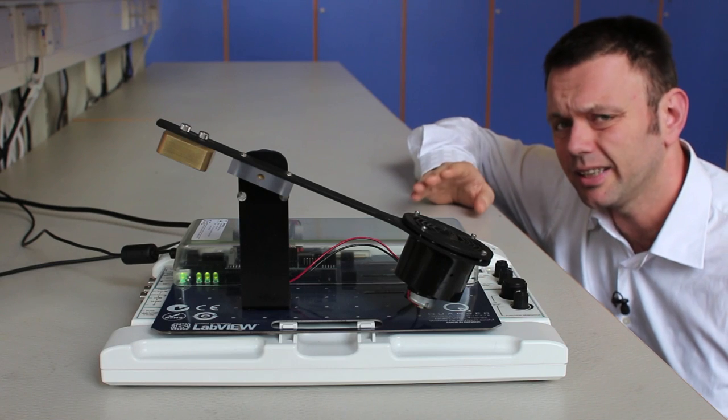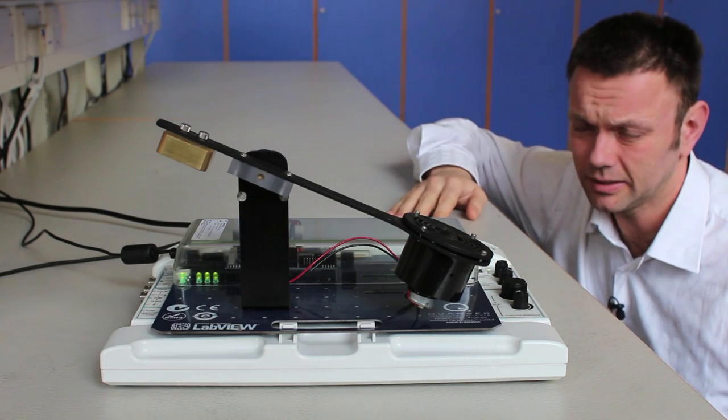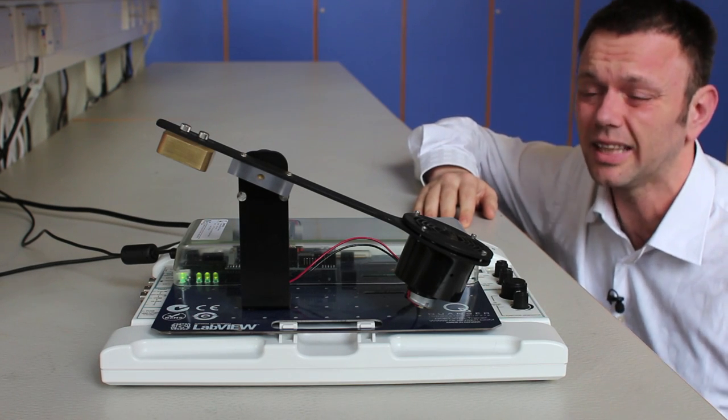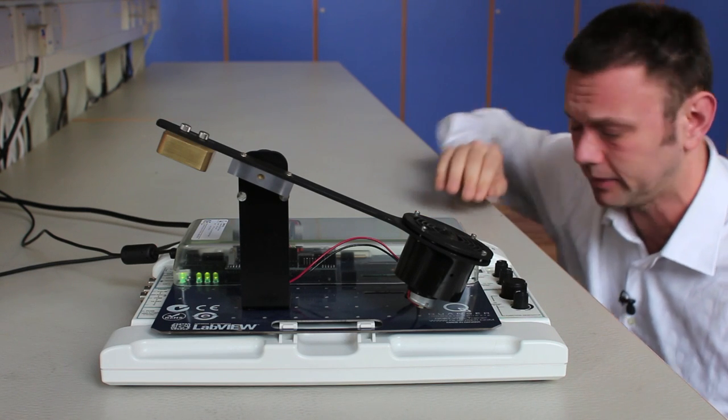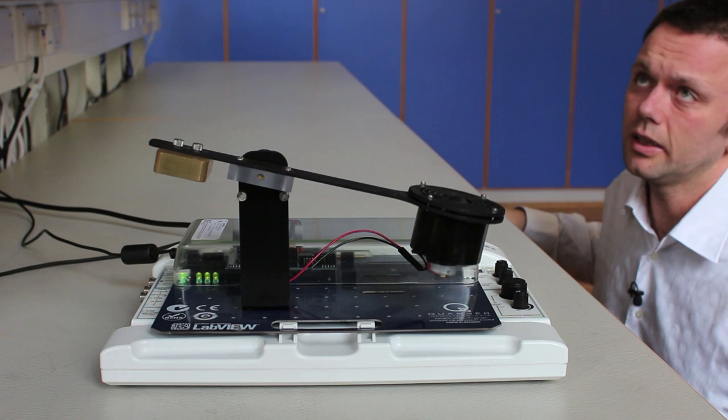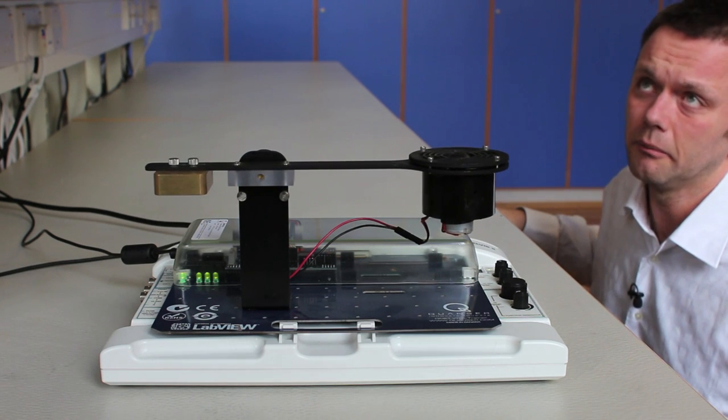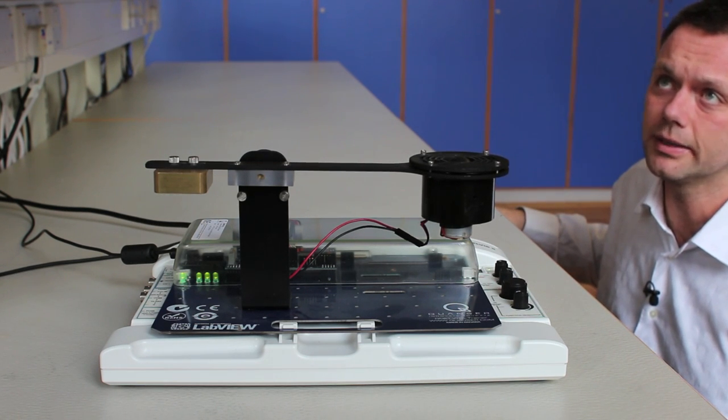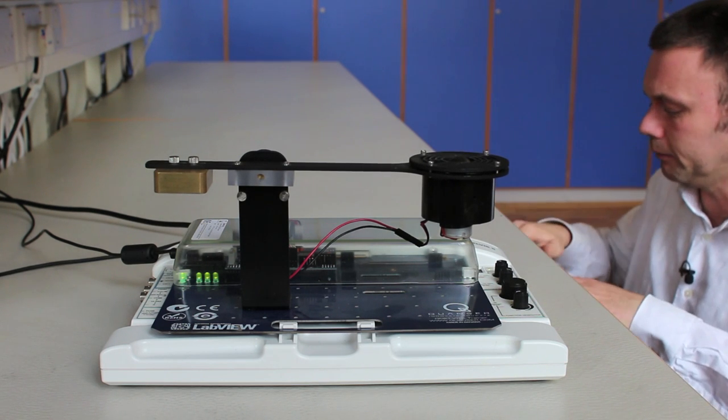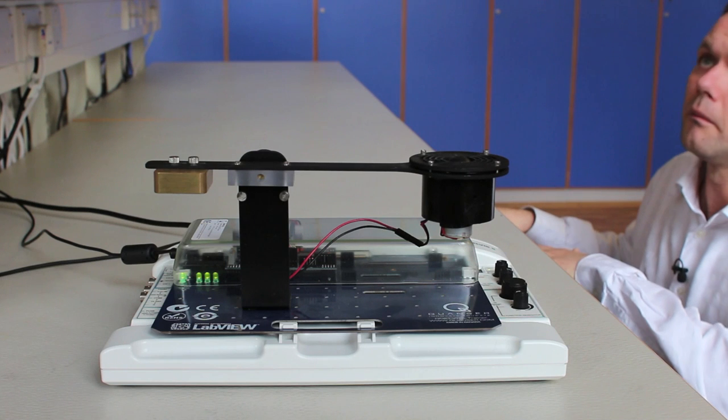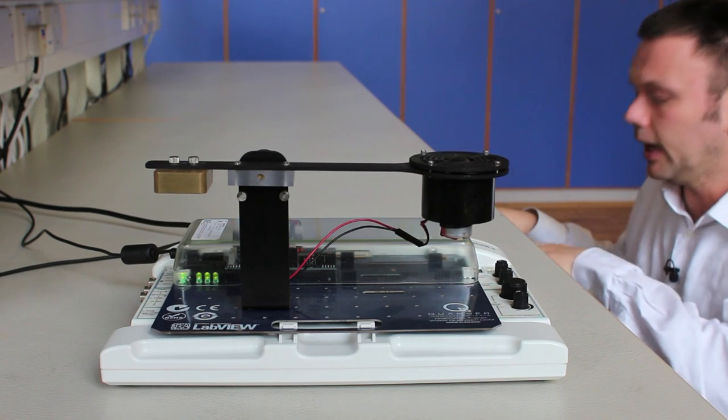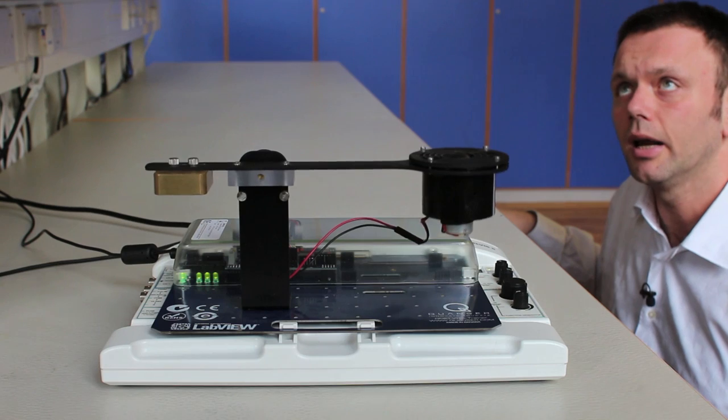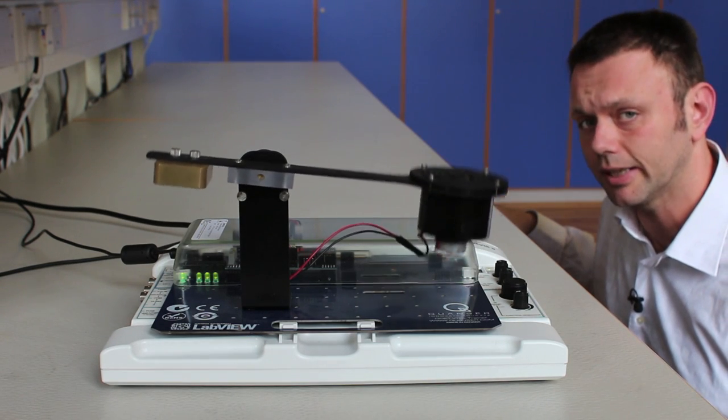However when designing a controller if we assume that there are no transients that the hovercraft does not undergo any transient response, then we will end up with a controller that actually destabilises the system rather than make it behave better. So here we have our control system in place properly designed and we are going to actually modify it so that it ignores the presence of transient behaviour. And we will see what happens. And what we will notice now is that the oscillations of the system are actually getting bigger and bigger and bigger until the hovercraft gets destroyed.